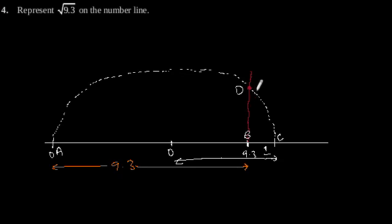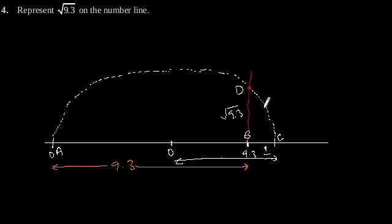The length of BD is √9.3. To represent √9.3 on the number line, we need to make an arc of radius BD that intersects the number line.